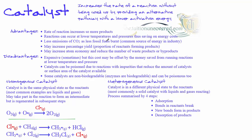Fossil fuels are a common source of energy for industry to mass-produce substances, such as ammonia in the Haber process. And of course, you can increase the percentage yield — the proportion of reactants that form your products.